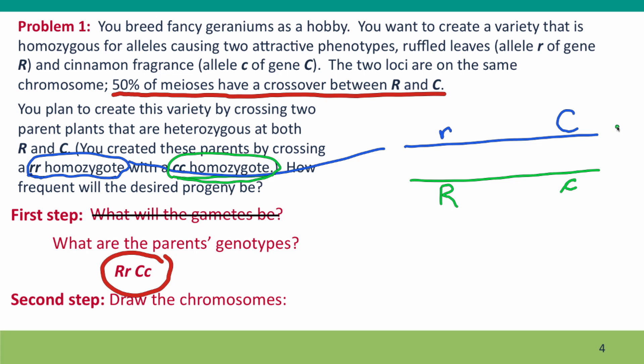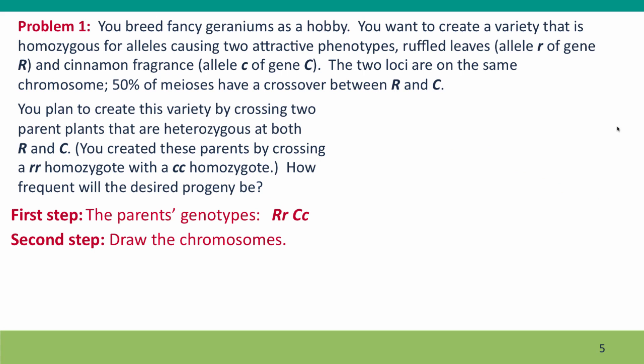So there's the parent chromosomes. The next step is to figure out what are the gametes going to be. So this is where you have to think about the consequences of crossing over. So again, we'll draw the parent's chromosomes. We've got the blue chromosome, which has little r, big C. And we've got the green chromosome, which has big R, little c. What are the gametes going to be?